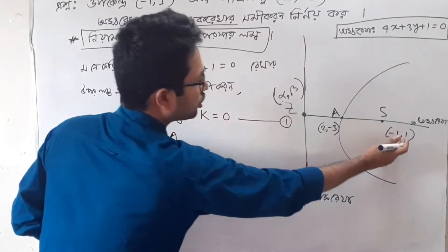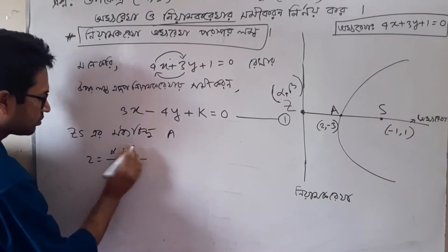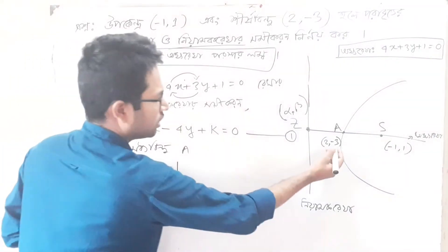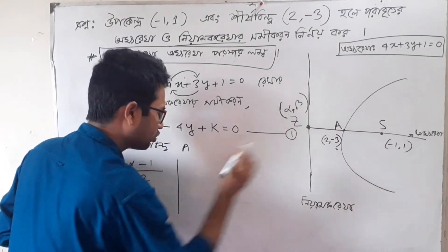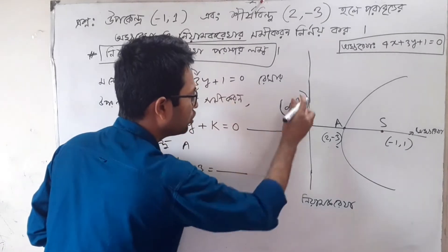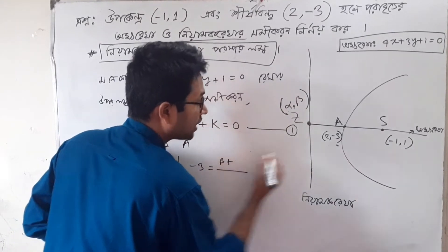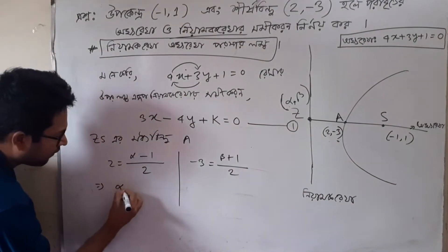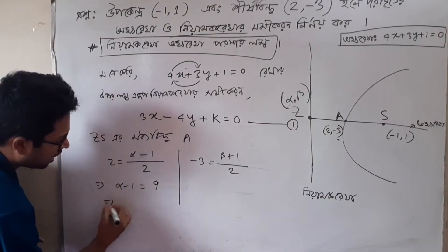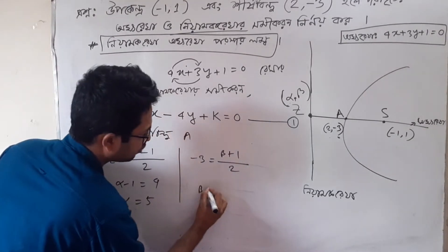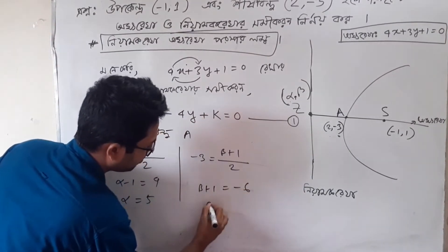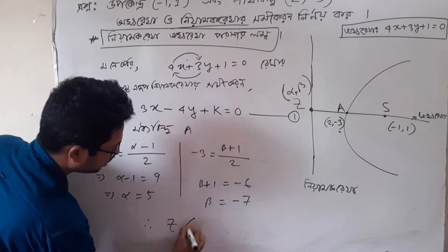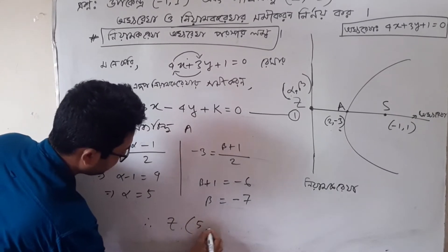Alpha plus minus one minus one by two. The first part is minus three, and the second part is plus one by two. So we have to argue that alpha minus one is equal to four, and alpha is equal to five; and beta plus one is equal to minus six, and beta is equal to minus seven. So we have to write z is equal to five minus seven.